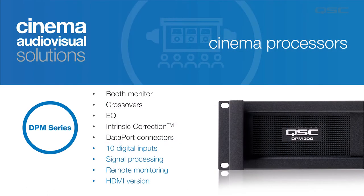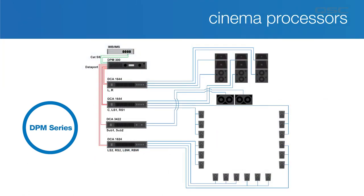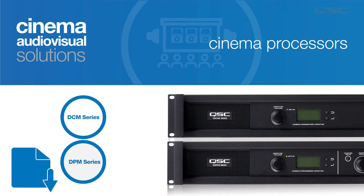The Digital Processing Monitor, or DPM series, includes the same features, including intrinsic correction, but adds 10 digital inputs, signal processing, and remote status monitoring through the DPM Manager application. The DPM series models are an all-in-one solution that receive their digital input directly from the integrated media block or server. They feature full graphic and parametric EQ and include more surround and subwoofer outputs for very large rooms. The DPM series can also accommodate passive, bi, tri, or quad amp screen channel operation. The DPM300H includes an HDMI input that decodes Dolby Digital Plus and DTS-HD multi-channel surround formats from sources like Blu-ray players and satellite receivers. We've included links to the specs for these processors in the links and downloads section.